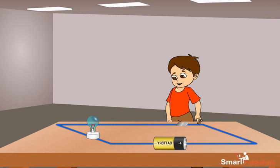Take an electric cell, a bulb, a switch and connecting wires. Make an electric circuit. Keep the switch in the OFF position.